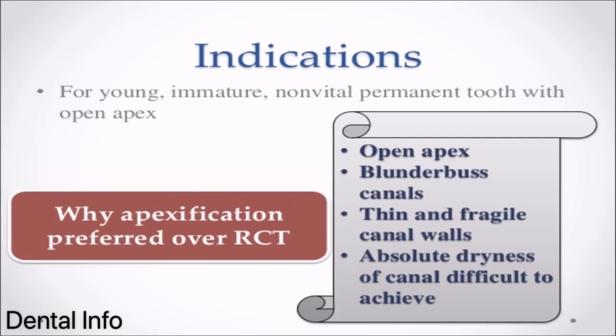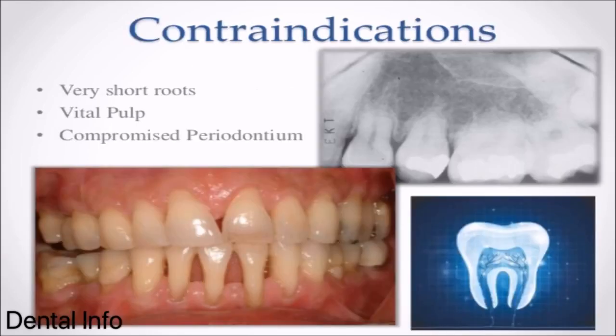Why Apexification is preferred over conventional RCT: Open apex, blunderbuss canals, thin and fragile canal walls, and absolute dryness of canal difficult to achieve. Contraindications: Very short roots, vital pulp, and compromised periodontium.